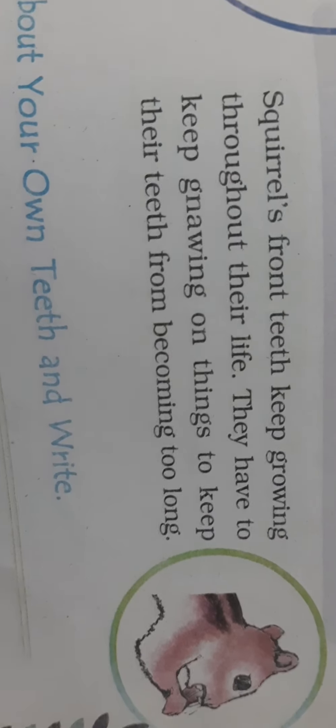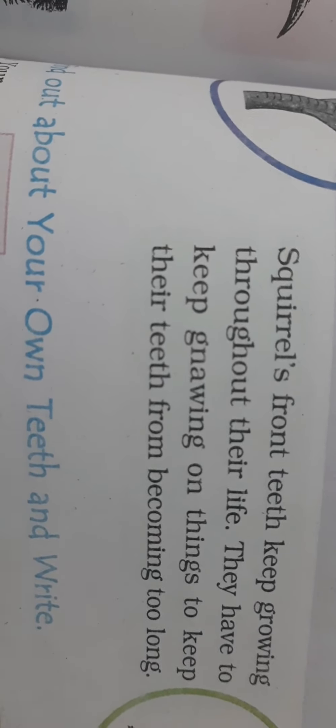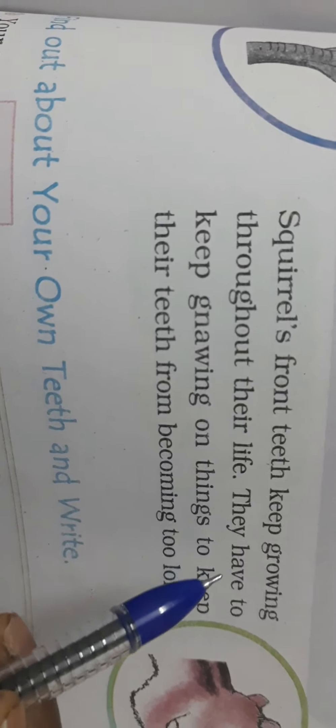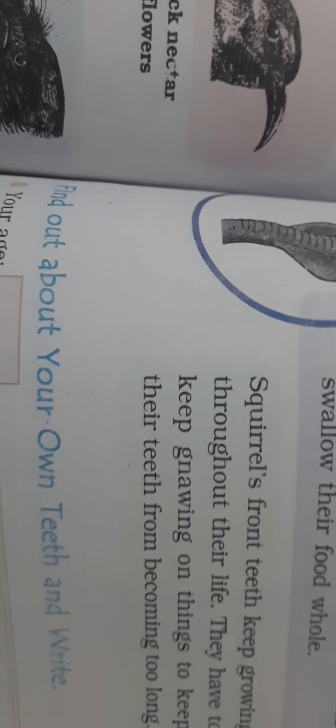Now — squirrel. Squirrels and similar animals have teeth that keep continuously growing. Squirrel's front teeth keep growing throughout their life — they have to keep gnawing on things to keep their teeth from becoming too long. Their front four teeth keep growing continuously, just like our hair and nails grow. So they must continuously chew things — if they do not, their teeth will grow too long and eating will also become difficult. That is why they keep gnawing things; mice do this for the same reason.